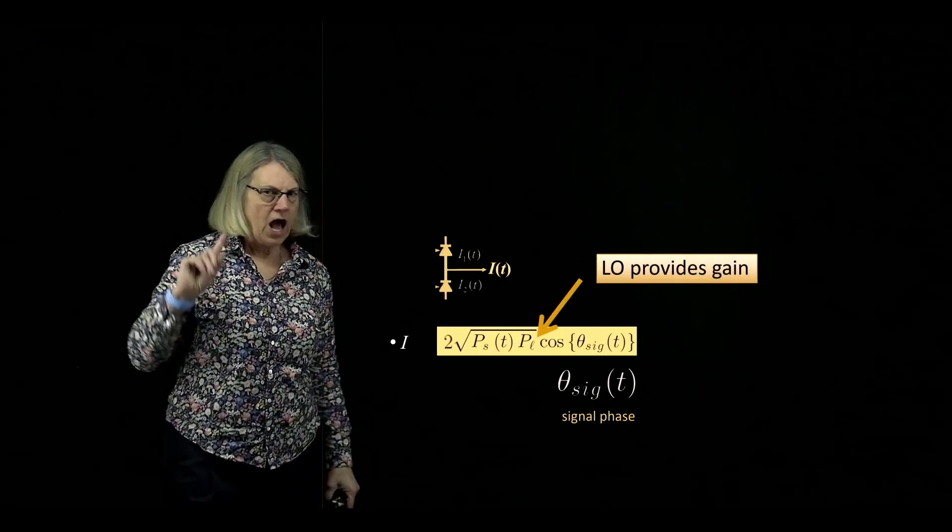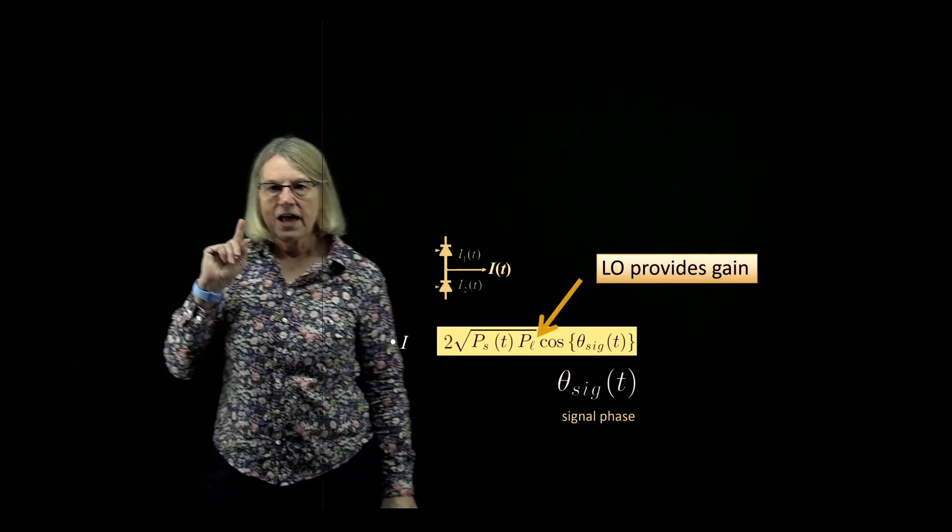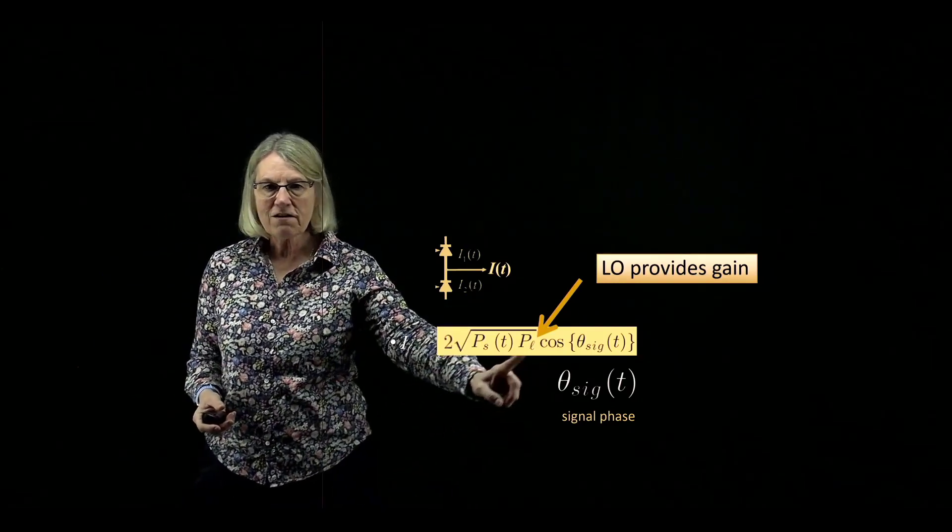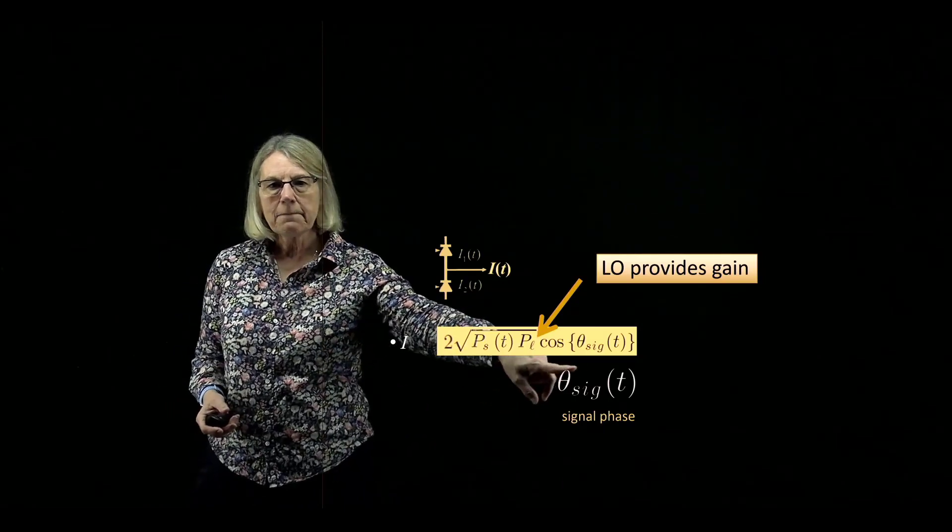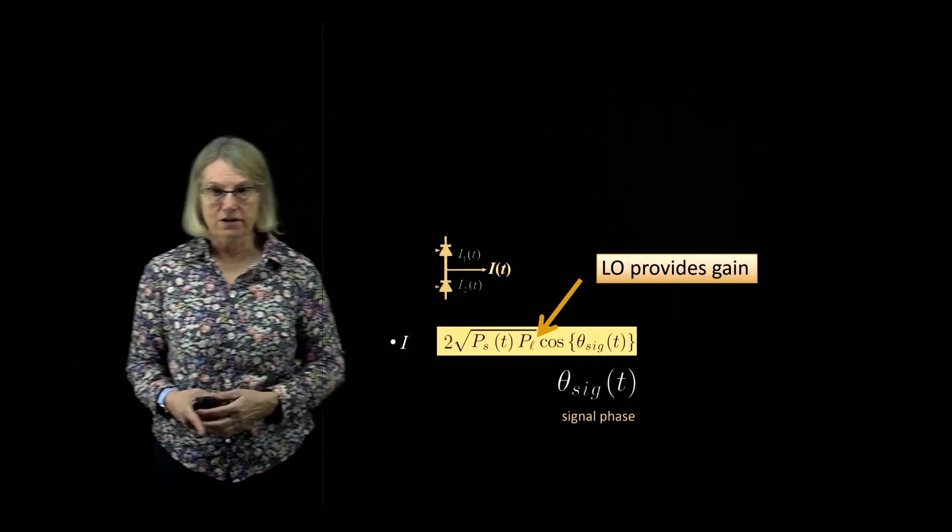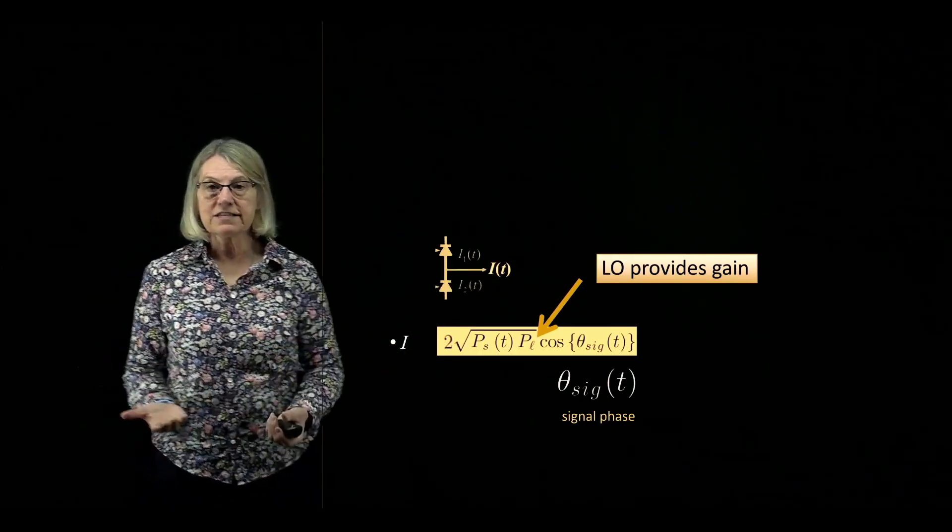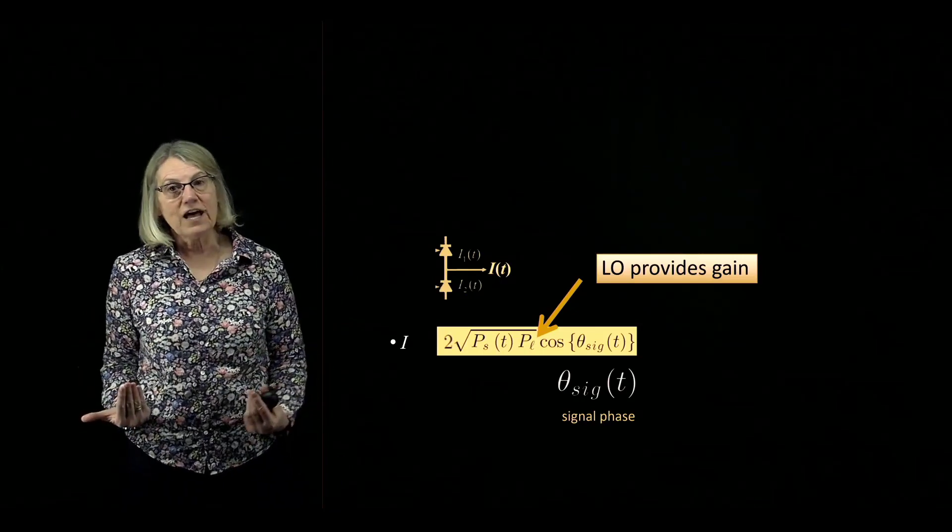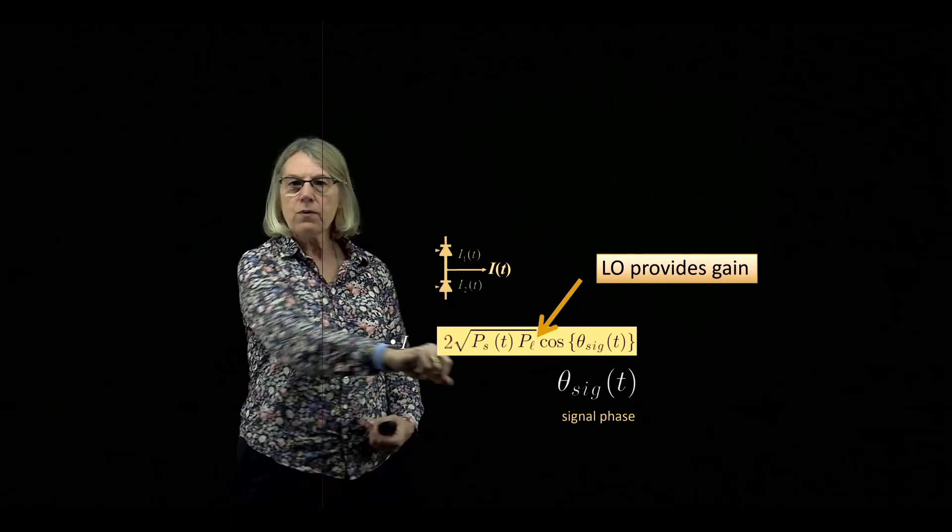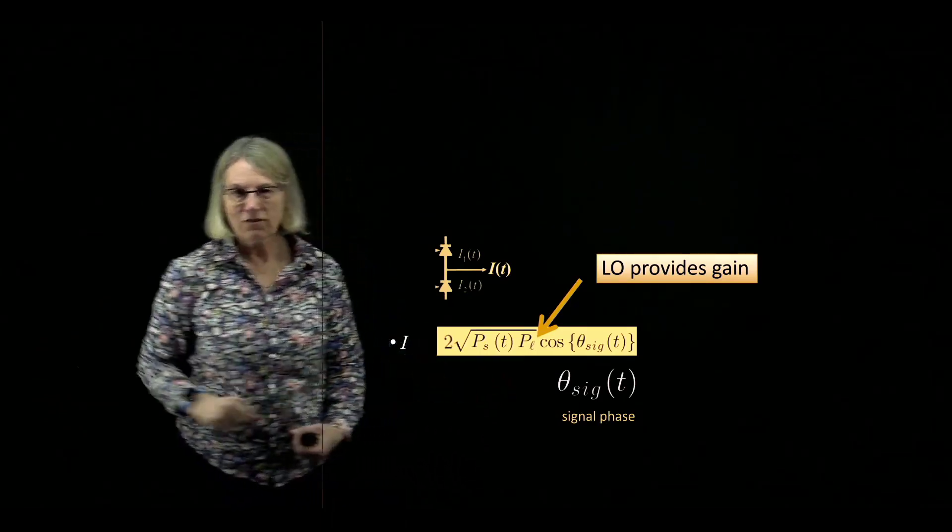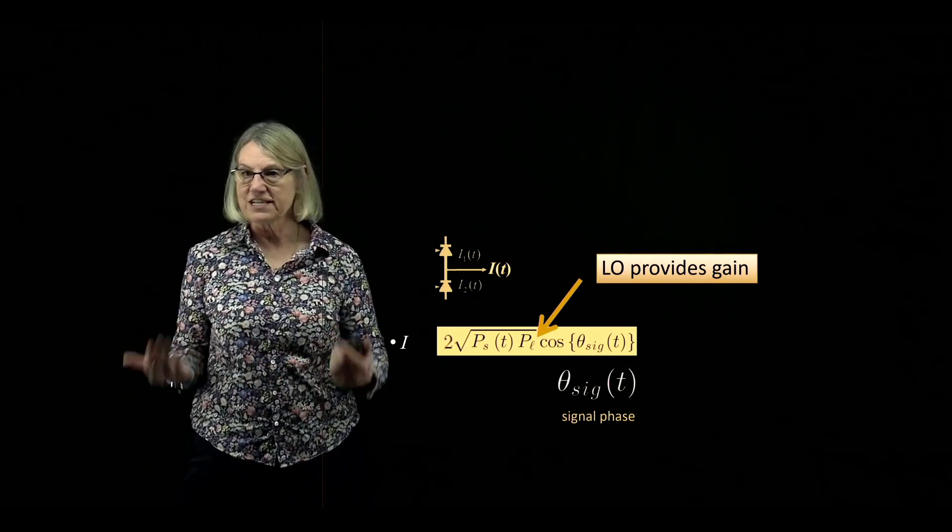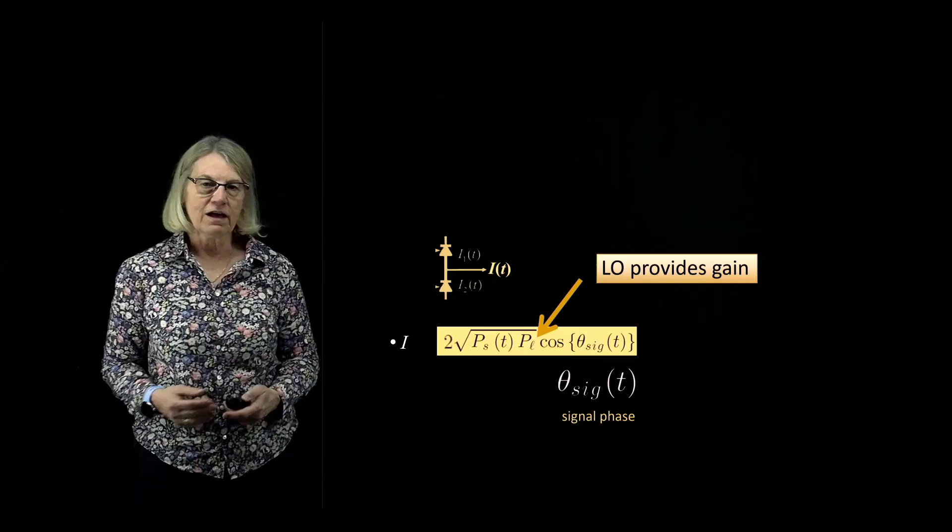Another very important characteristic of coherent detection is this term where multiplying my data signal, I have the power of the local oscillator. This means that in coherent detection I require a local oscillator - that makes it more complex. But right away I get bang for my buck. I get gain from having that local oscillator present at the receiver, and this provides much greater sensitivity in the detection of my signal.